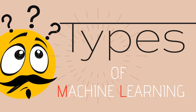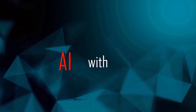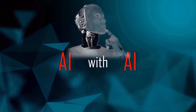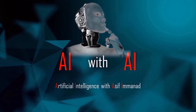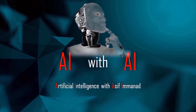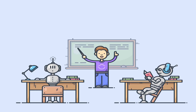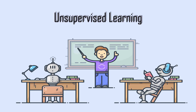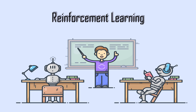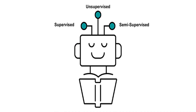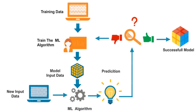Watch this video till the end and let's get started. What are the types of machine learning? Machine learning is categorized into three types: type 1 is supervised learning, type 2 is unsupervised learning, and type 3 is reinforcement learning. Let's understand these types of machine learning one by one in detail.